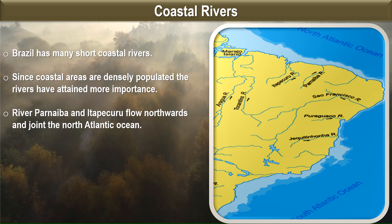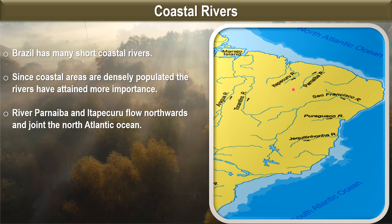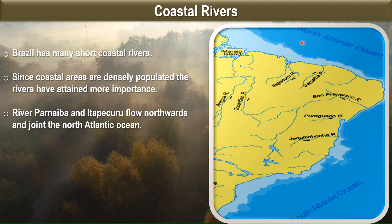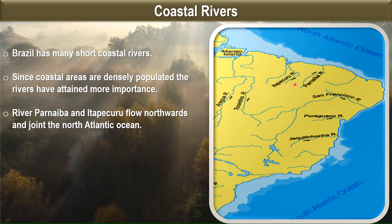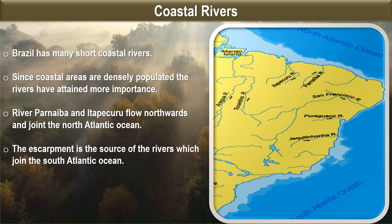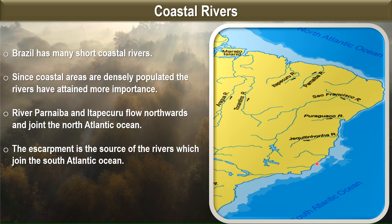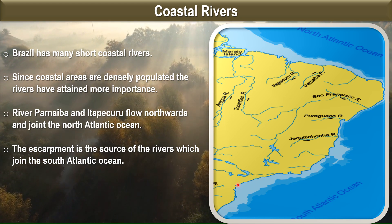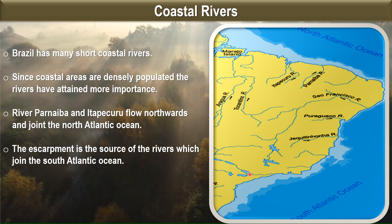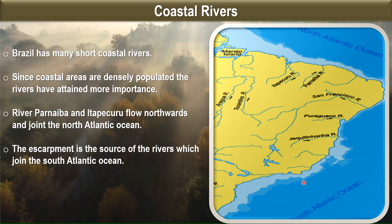The rivers Parnaíba and Itkapiru flow northwards and join the North Atlantic Ocean, as shown by the northward arrows on the map. The escarpment is the source of the rivers that join the South Atlantic Ocean — meaning these rivers originate from the escarpment and flow into the South Atlantic.